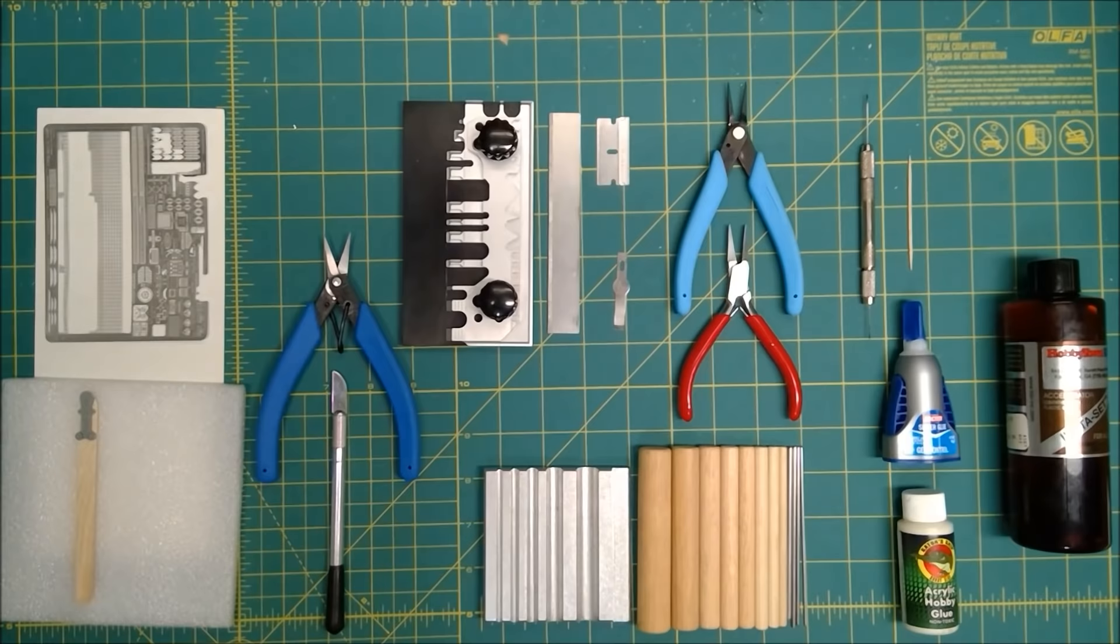Hi and thanks for checking out this new video here on the Museum Modeler channel. Today I'm going to be looking at 1/700 scale photo etch railing for ships, specifically how to cut, form, attach, and paint it.